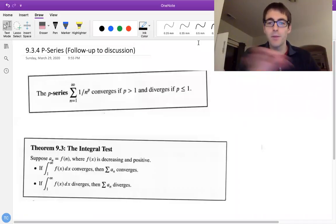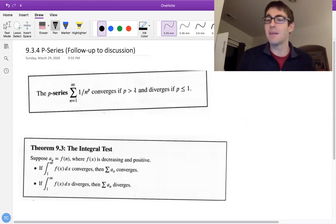All right, last playlist I asked you to think about why this p-series statement works. So the statement is that the series 1 over n to the p converges if p is bigger than 1 and diverges if p is less than or equal to 1. And I asked you last time to think about why this works, and the main reason it works is that it falls directly from the integral test.